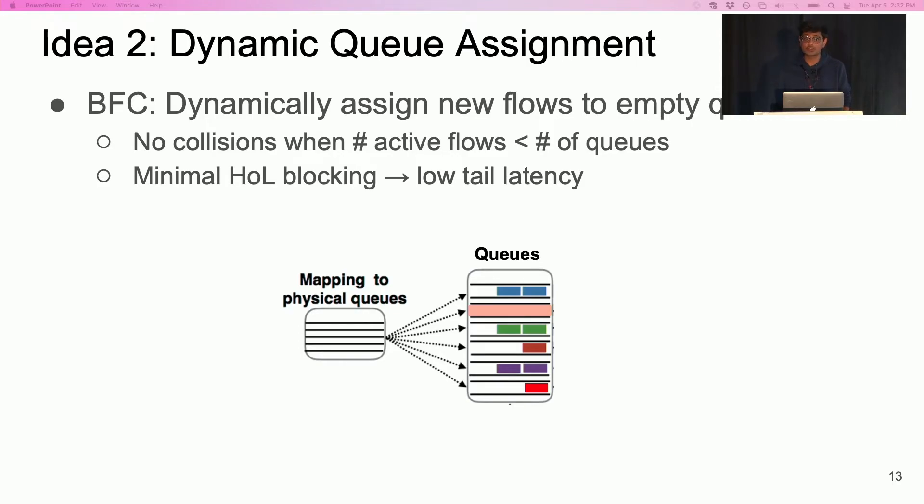However, unlike stochastic hashing, dynamic queue assignment requires additional bookkeeping to track active flows. BFC uses a flow table which is just a fixed size array to track active flows. In the interest of time, I'll skip a discussion on design of the flow table.